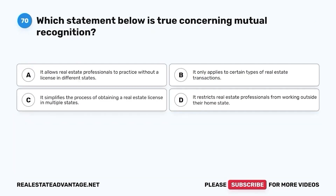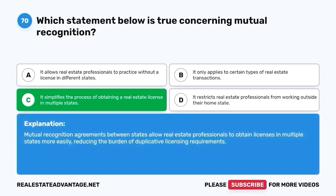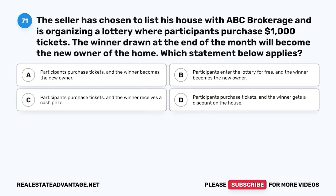Question 70. Which statement below is true concerning mutual recognition? A. It allows real estate professionals to practice without a license in different states. B. It only applies to certain types of real estate transactions. C. It simplifies the process of obtaining a real estate license in multiple states. D. It restricts real estate professionals from working outside their home state. The correct answer is C. Mutual recognition agreements between states allow real estate professionals to obtain licenses in multiple states more easily, reducing the burden of duplicative licensing requirements.